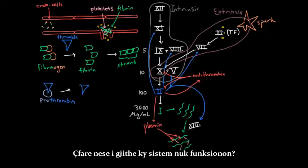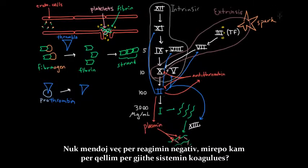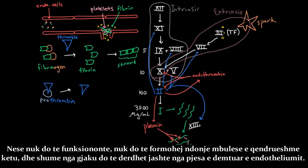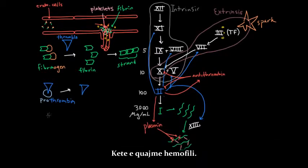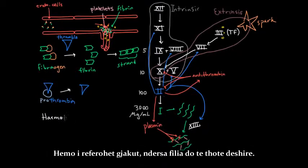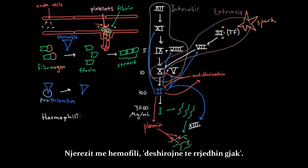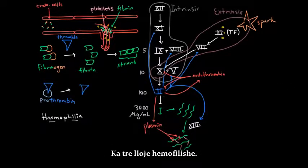So what if this whole system didn't work? I don't mean the negative feedback but I mean the whole clotting system. Well, if it didn't work then you wouldn't form a stable plug here and you would get lots of blood pouring out of your damaged endothelium. And so what we call that is hemophilia. Hemo refers to blood and philia means love. So people who have hemophilia love to bleed.